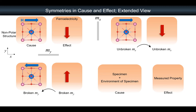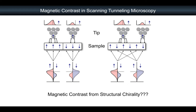Let's bring this to scanning tunneling microscopy, the main tool I'm using. We usually think of magnetic contrast in STM as follows: blue arrows represent magnetization going up or down in a ferromagnetic material. When we use a magnetized tip, by aligning them we get a larger signal; by anti-parallel alignment, we get a lower signal. Usually, we think of magnetic contrast in STM as picking up magnetic order in the material. But as I said in the title, the contrast can come from structural chirality, not from magnetic order. We have to check the symmetry first.